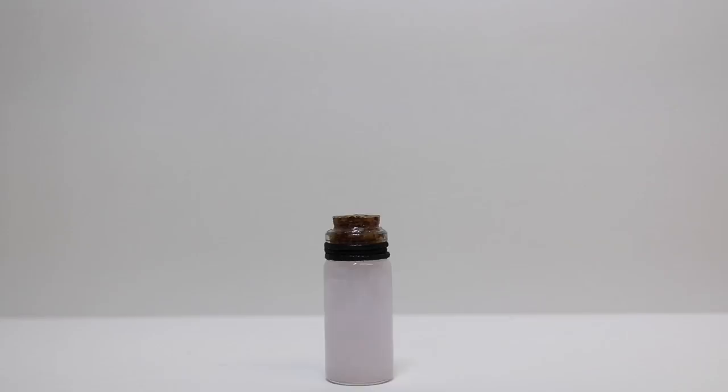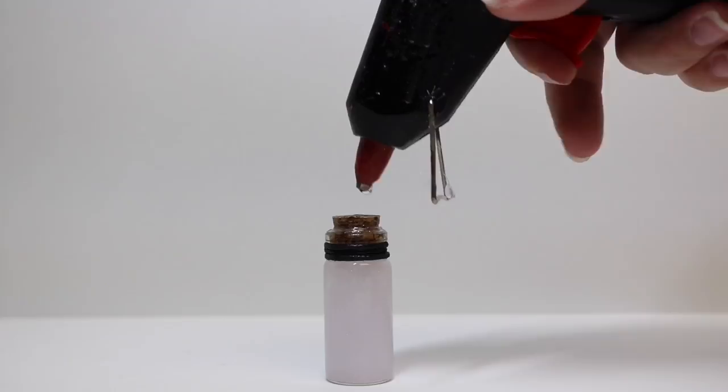Now that we have our cording on, I'm going to take my hot glue gun and we are just going to create some faux wax drips with the glue gun. We're just going to go all over the cork and let it drip down the side.